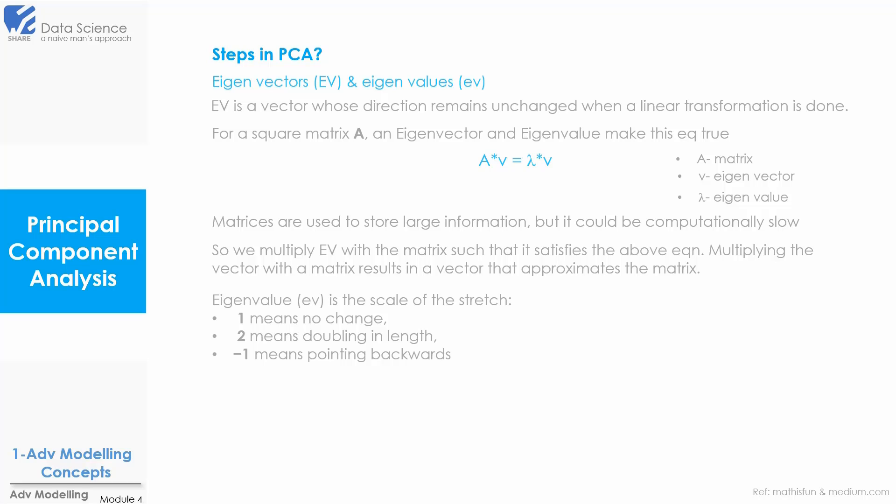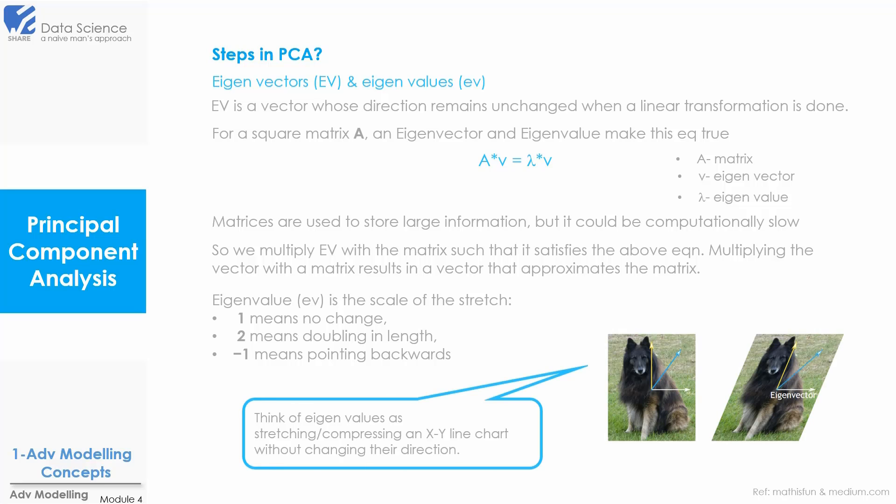Now eigenvalues is the scale of the stretch. One means no change, two means doubling in length, and minus one means pointing backwards. So here you can look at the picture. We perform a linear transformation and you may think of eigenvalues as the stretching, compressing and xy line chart without changing their direction. Also we can see here that eigenvector is a vector that does not change direction in a transformation.